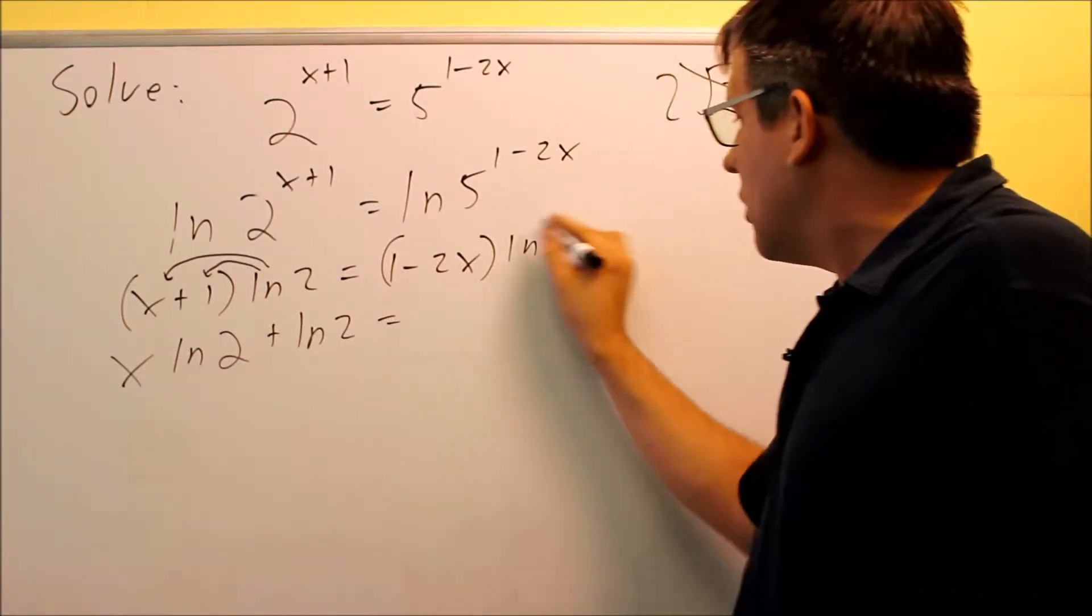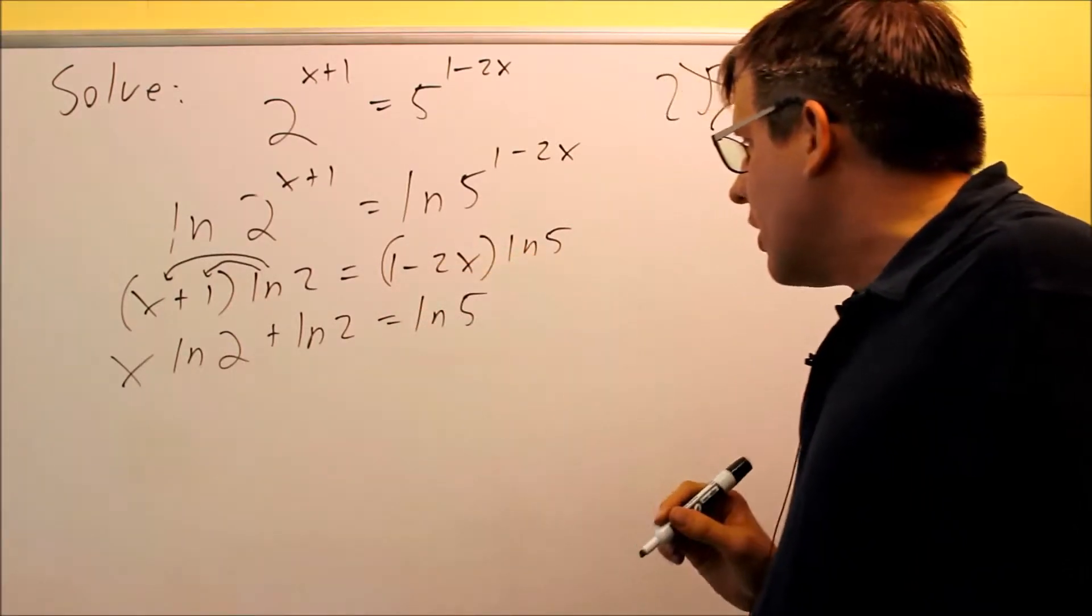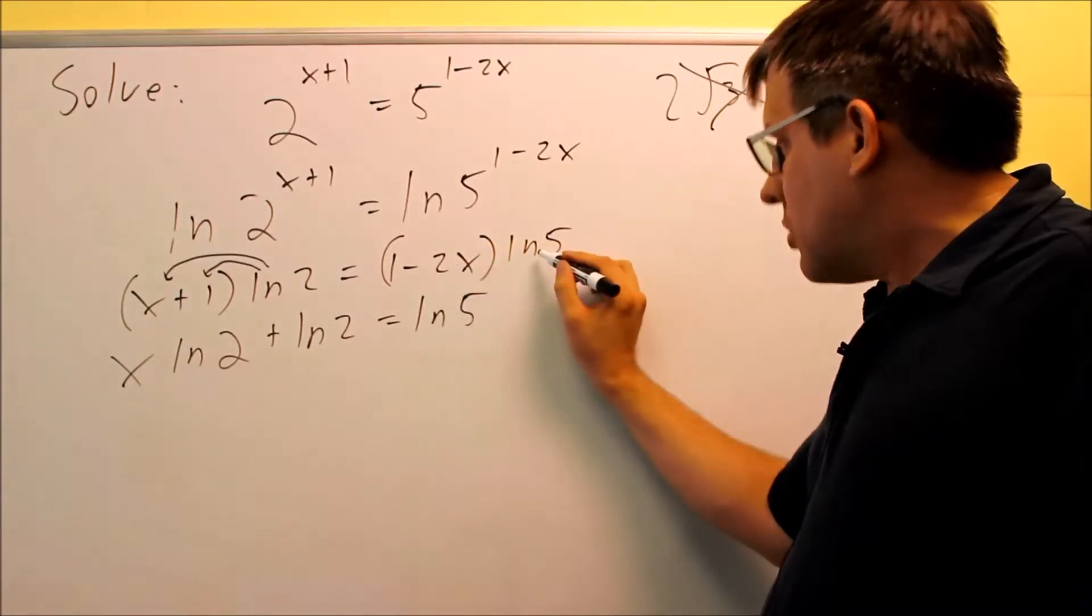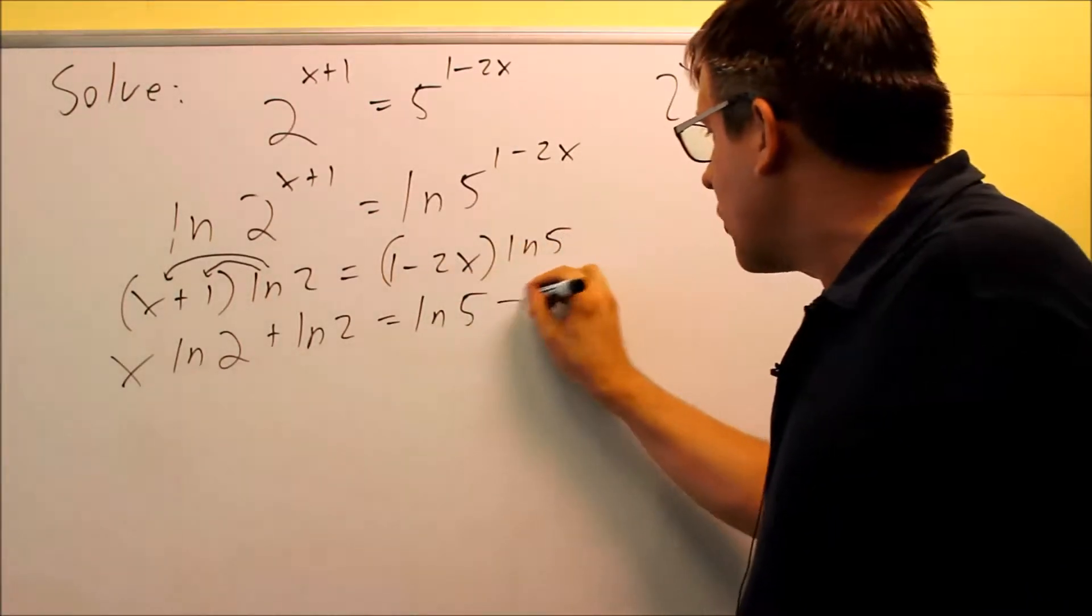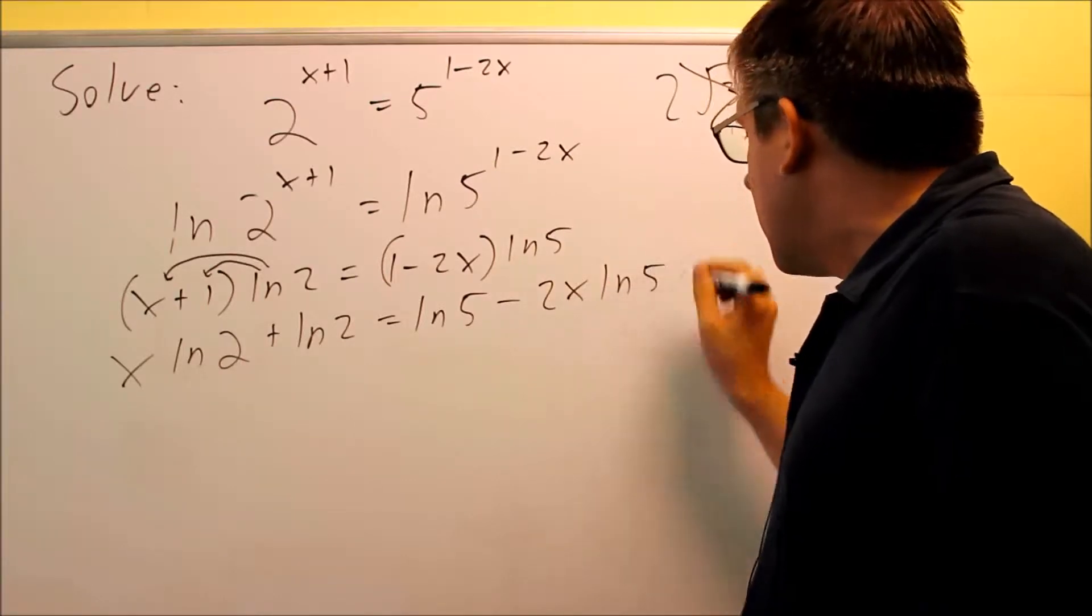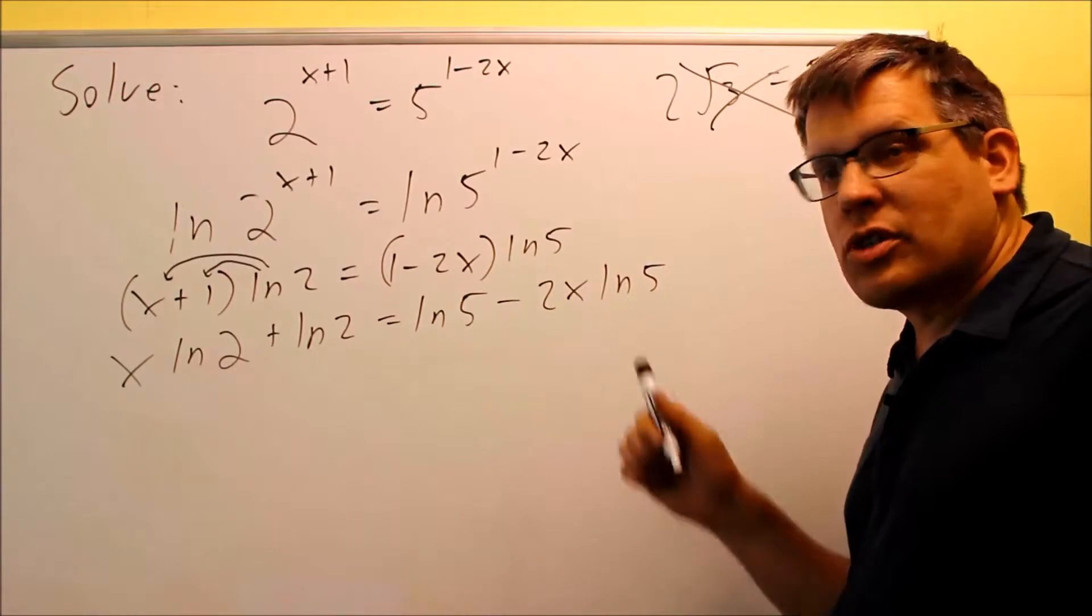Let's do the same thing with this one. ln 5 times 1, that's natural log of 5. If I have negative 2x times ln 5, again, I'm not allowed to take that inside. I have to just leave it written this way: minus 2x times ln 5.